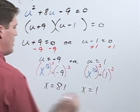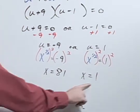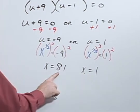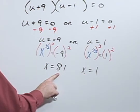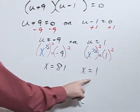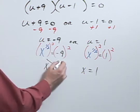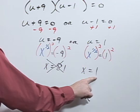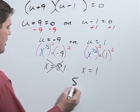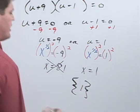Now again, it's important because we did the u substitution that I check both of these answers. When I do that, I find that x equal 81 doesn't work, but x equal 1 does. So my solution is 1.